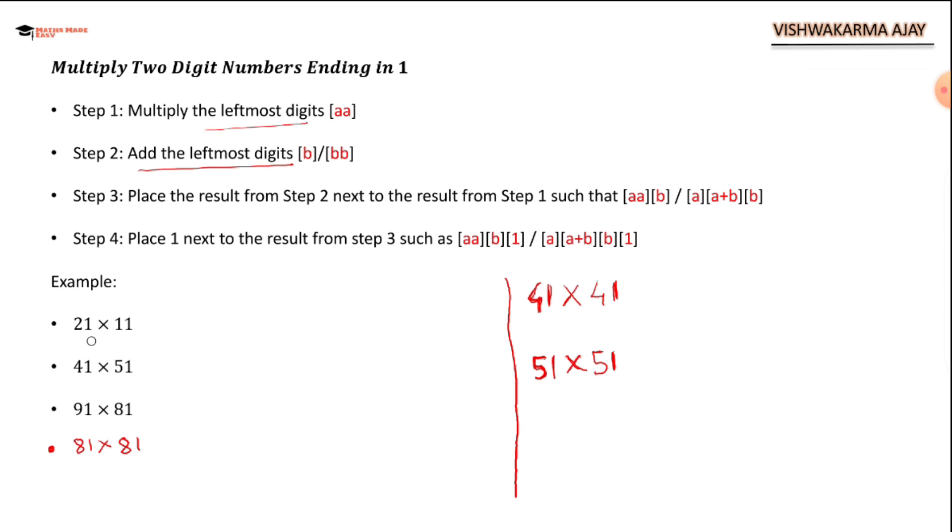So we will start with some examples. 21 times 11. See at the unit place there is one. They are ending in one. So as per our first step, multiply the leftmost digit. So two times one is two.